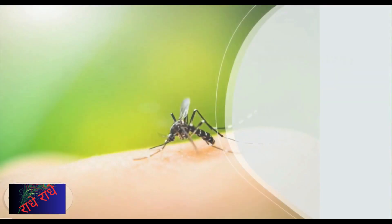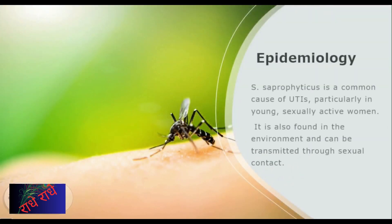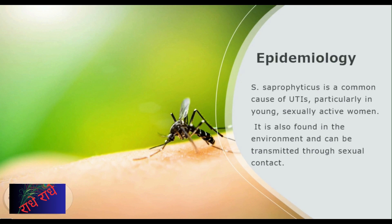Staphylococcus saprophyticus is the major cause of urinary tract infections in young, sexually active women. This bacterium can be transmitted through sexual contact and is also present in environmental sources. Therefore, it is essential to take the needed measures to stave off such infections, and proper treatment should be administered if exposed to this particular species.